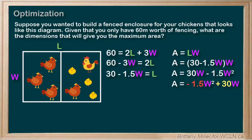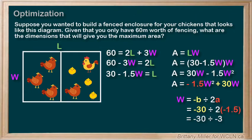We can find the vertex, which will be the maximum, using W equals negative B over 2A. That gives negative 30 over 2 times negative 1.5, which is negative 30 divided by negative 3, which is 10. So the width is going to be 10 meters.